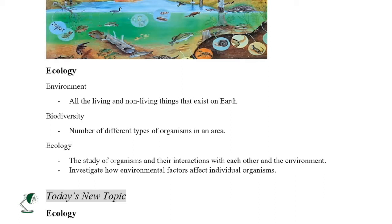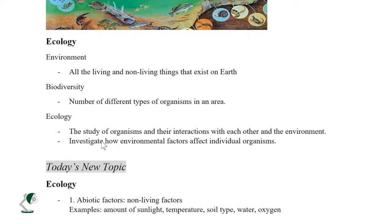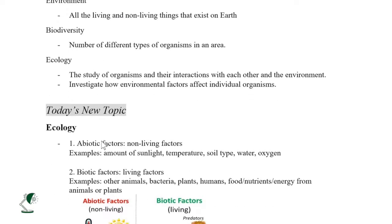When we say environment, we're referring to all the living and non-living things that exist on Earth in a certain space. From the diagram, you can see there is a lot of biodiversity — biodiversity referring to the number of different types of organisms in one area. In ecology, we investigate how environmental factors like biotic or abiotic affect individual organisms in one area.